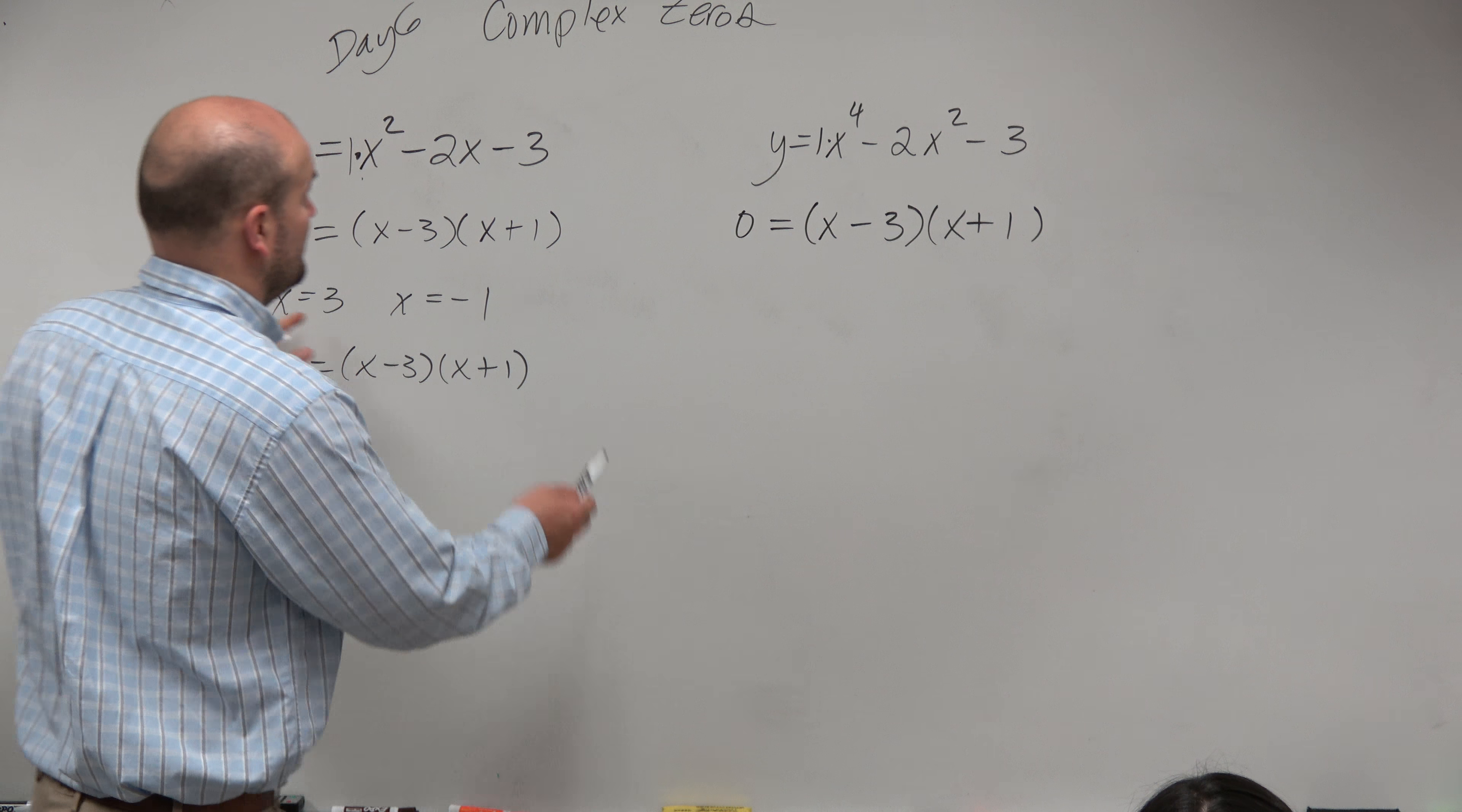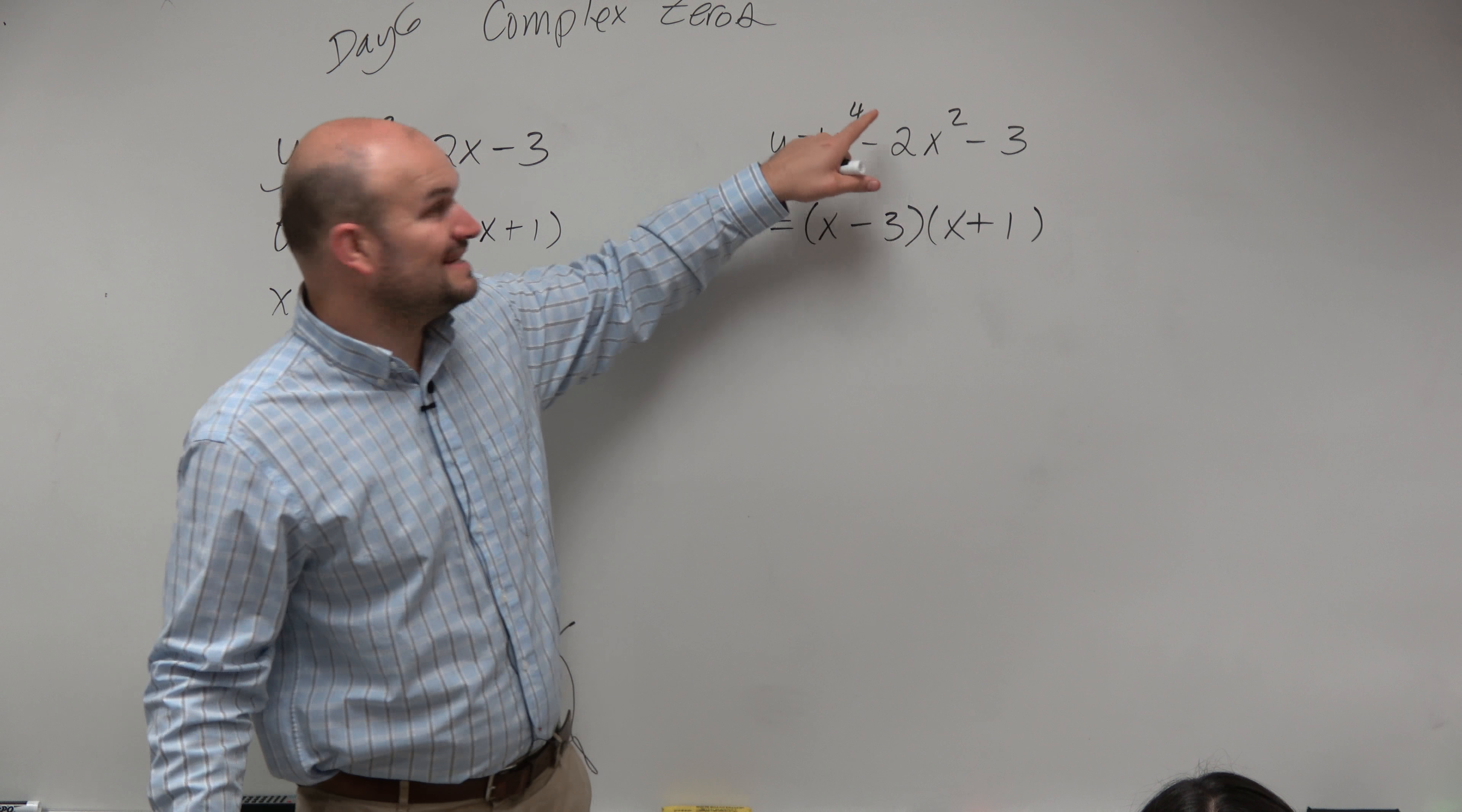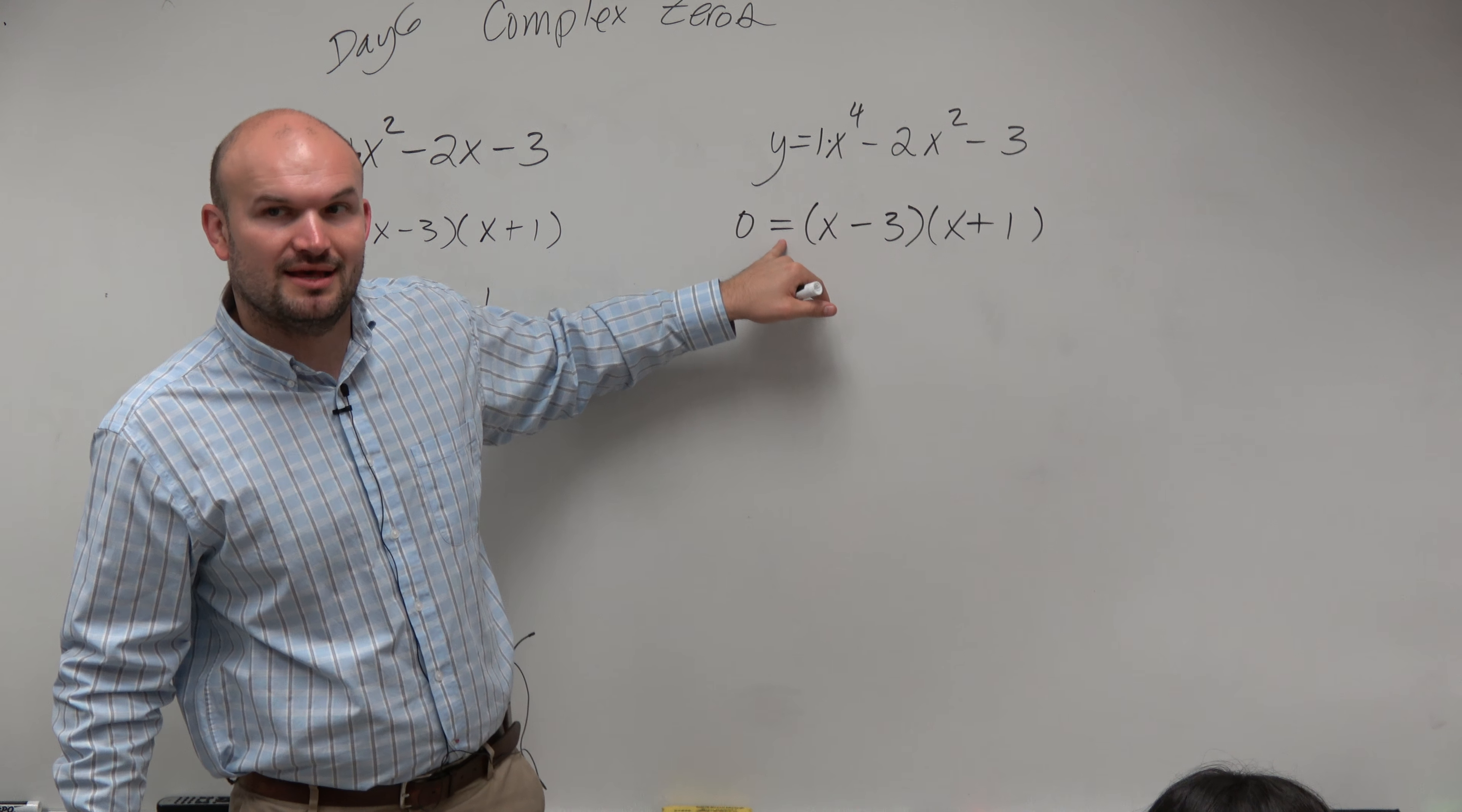The issue is this is squared, and this is to the first power. This is to the fourth. This is to the second. So when I'm multiplying my x and my x, I need to get to x to the fourth. And when I'm combining my middle terms, I need to have x squared as the power. So what power should I be raising these factors to to obtain that?